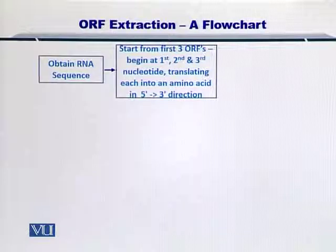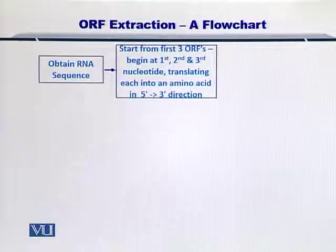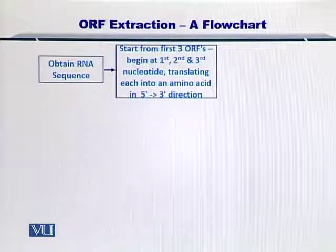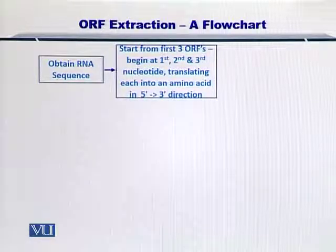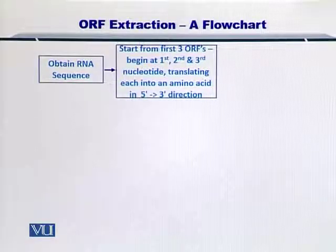you have three additional possibilities for the ORF. Therefore, starting from the 5' to 3' end, you have three ORFs, and you translate each codon starting from the start codon — that is methionine — then you code for the amino acids until you arrive at the stop codon.